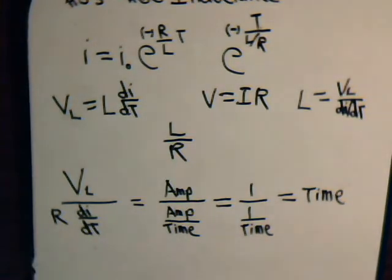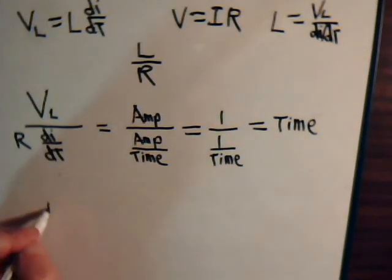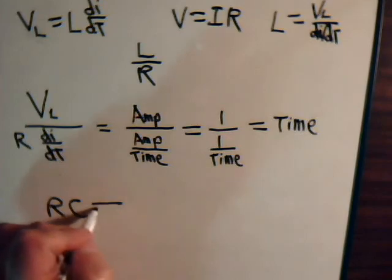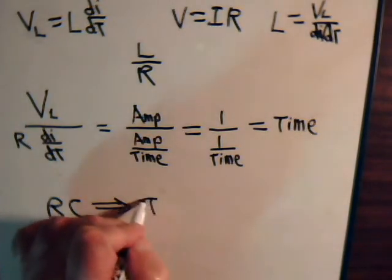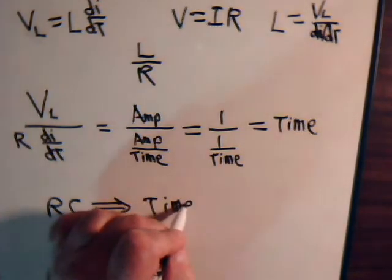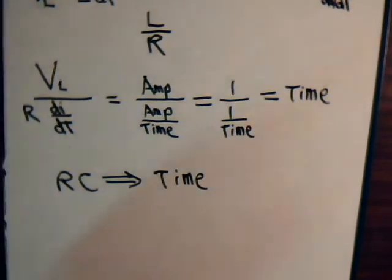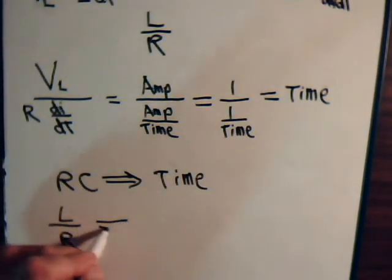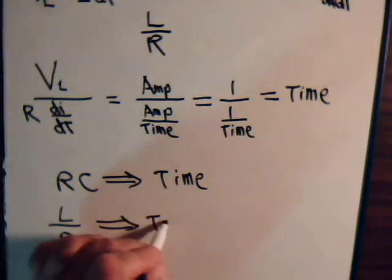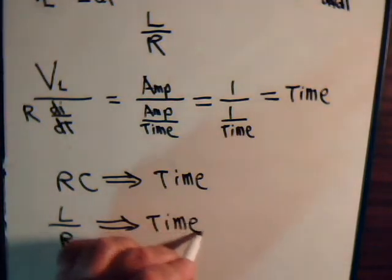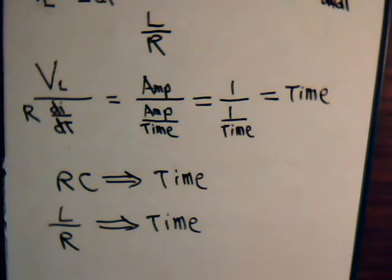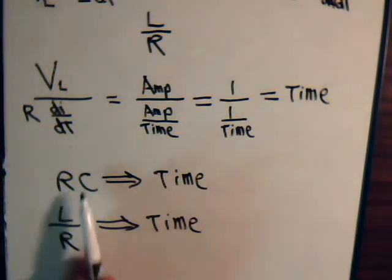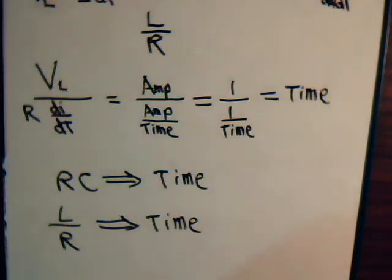So hopefully we've given at least a basic insight as to why R times C can give a unit of time. And likewise, L divided by R can also yield a unit of time. And in fact, these are called the time constants. And we'll talk more about them when we get into alternating currents.